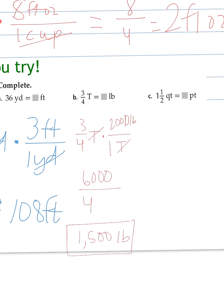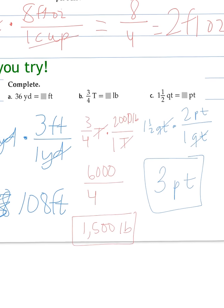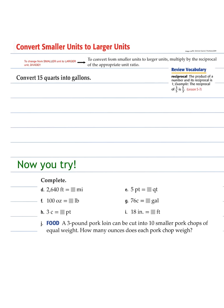Last one. One and a half quarts equals how many pints? So I have my one and a half quarts times the unit ratio. And there are two pints per one quart. My quarts cancel. So now one and a half times two equals three pints. So there is my answer on that.